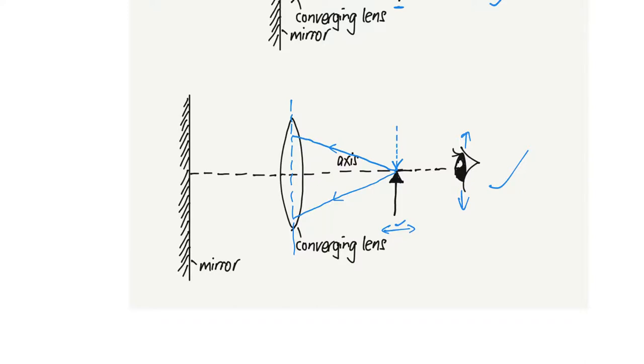This light ray has to be parallel to the principal axis. When it hits the mirror, it will obey the law of reflection, be reflected back, and then it goes back here. That's why the image is at this position.